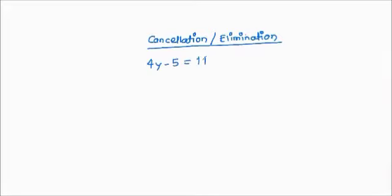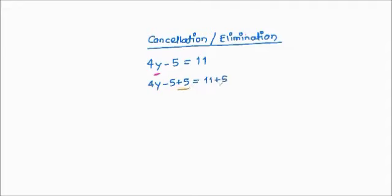Let's try another example: 4y − 5 = 11. We need to keep y intact, so first cancel anything not directly bound to y. Here, 4 is bound to y by multiplication, so we cancel that last. First we cancel −5 by adding +5 to both sides. −5 + 5 cancels, leaving 4y, and 11 + 5 = 16. So 4y = 16.